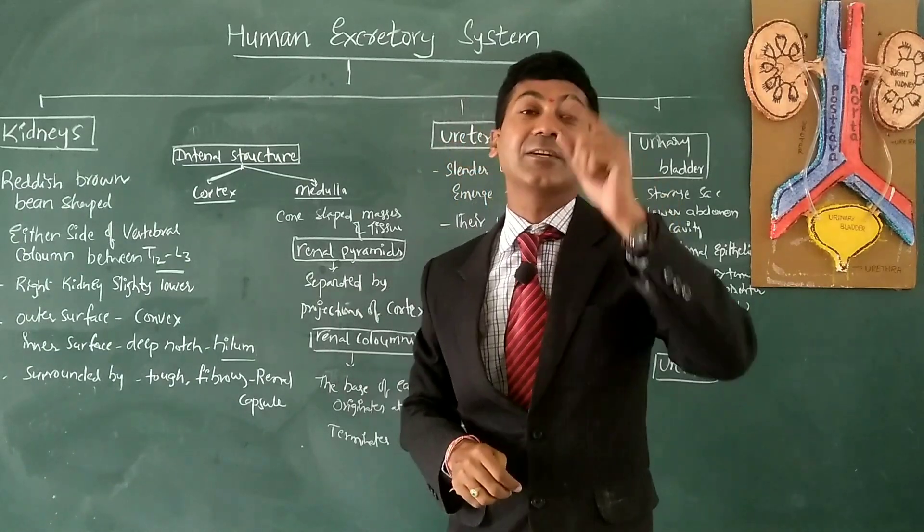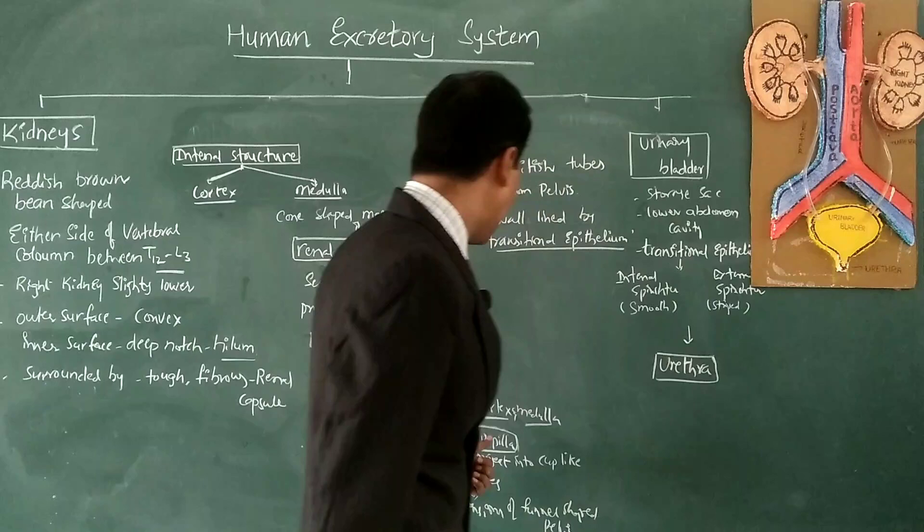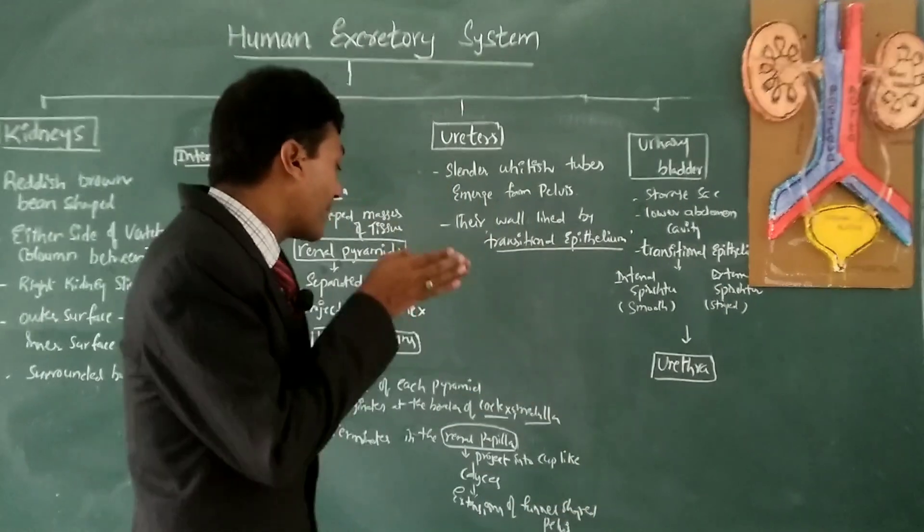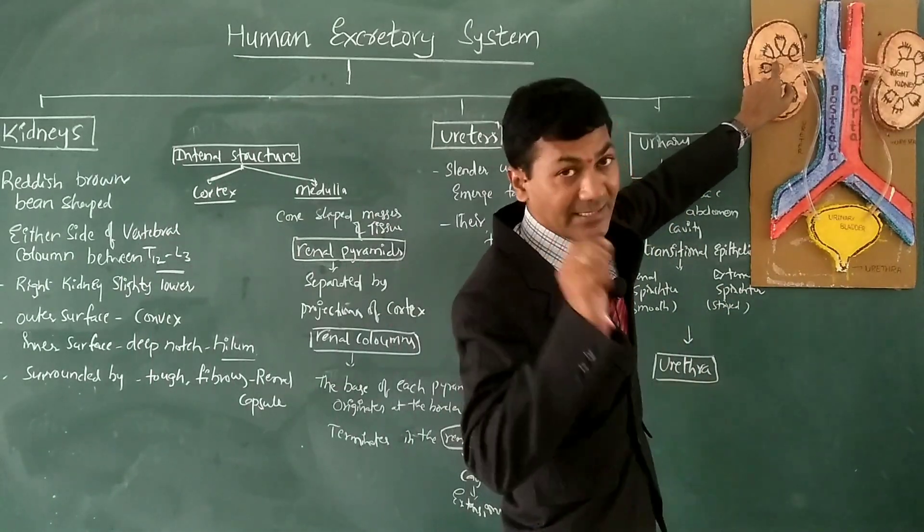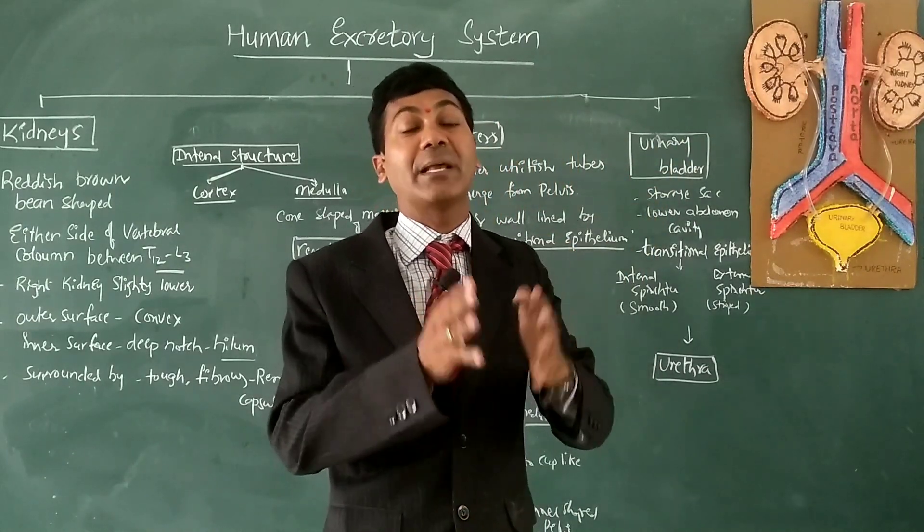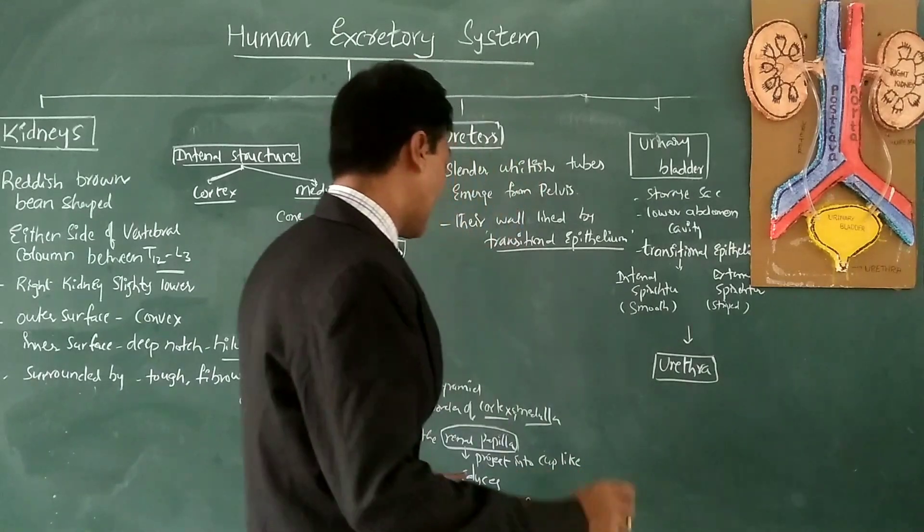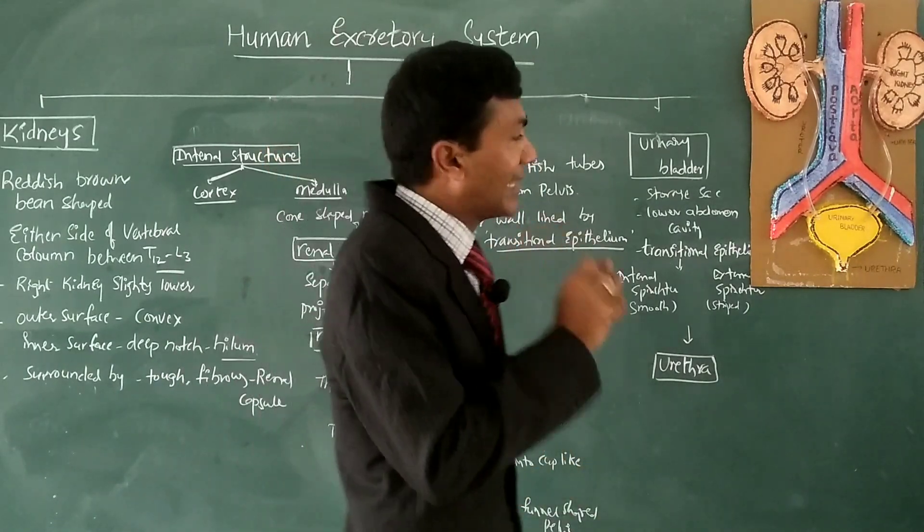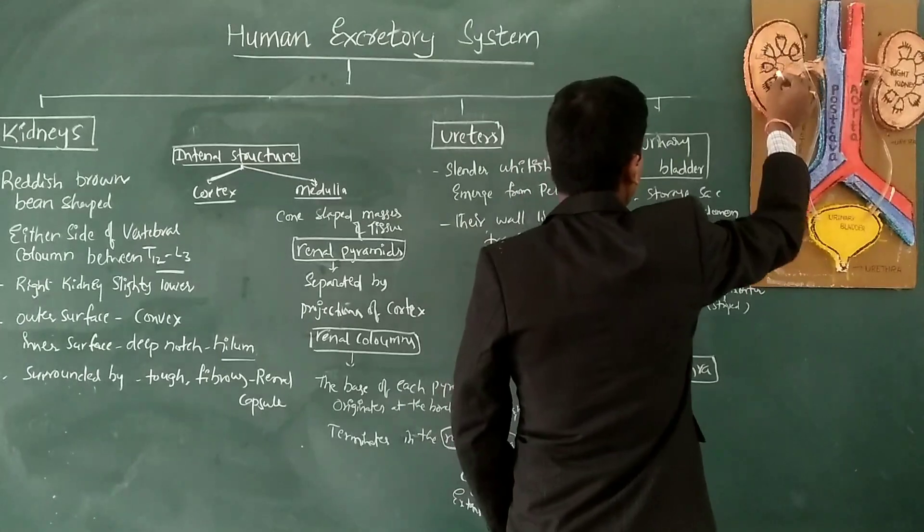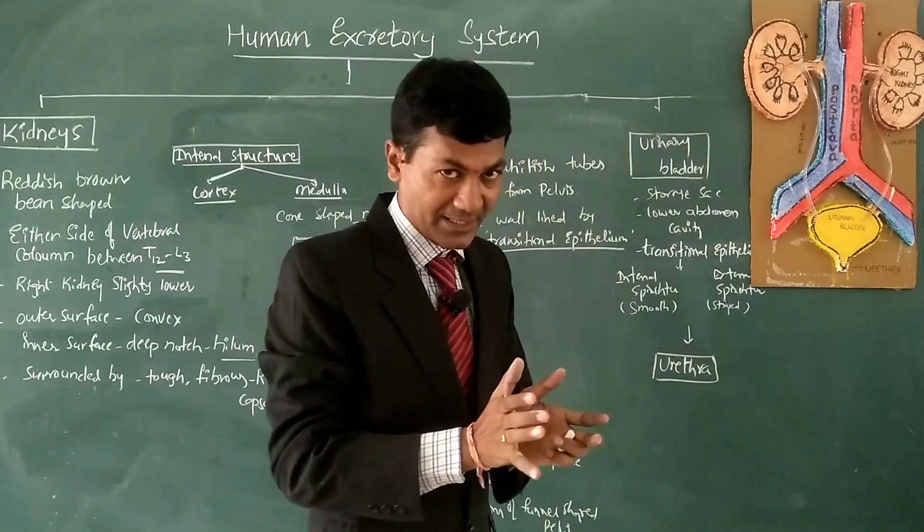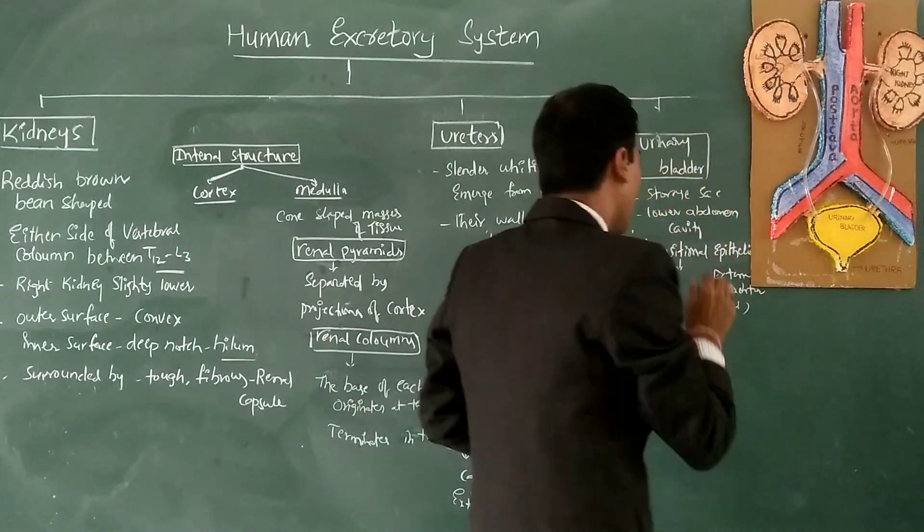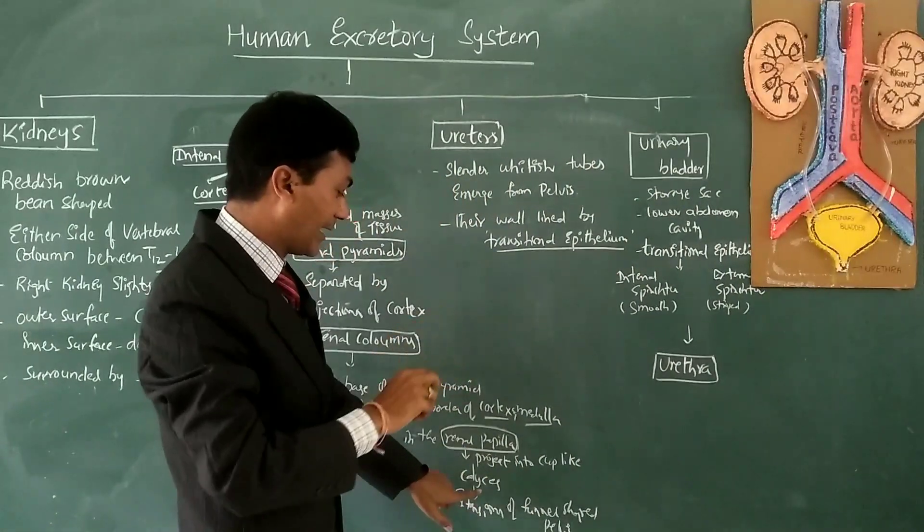The renal papilla projects into cup-like structures known as calyces (singular: calyx). The pelvis is a cone-shaped structure which has extensions, and each extension forms a calyx.